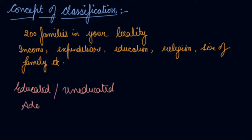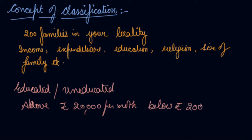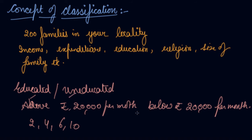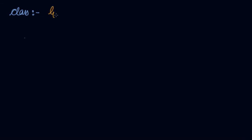Until and unless you do not know how many families are educated or uneducated, how many families' income is above rupees 20,000 per month and below rupees 20,000 per month, what is the religion, the number of family members — either two, four, six, or ten — so in order to make the raw data meaningful you have to classify it on the basis of different characteristics such as educated or uneducated families, rich or poor families.